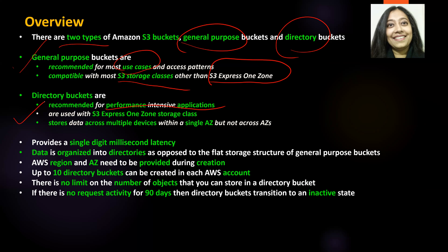S3 Express One Zone stores data across multiple devices but within a single AZ. So directory buckets, since they use S3 Express One Zone, will give you performance for intensive applications. However, that performance comes with a risk — your data is stored in a single AZ. When you create a directory bucket, it gives you a disclaimer saying that you accept this risk. If you're willing to take that risk, go ahead and use the directory bucket.